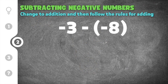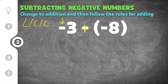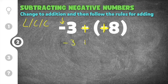Moving on to our second problem: negative three minus negative eight. We're going to do leave change change because we're subtracting two negative numbers. We leave negative three the same, change this minus into a plus, and change negative eight into a positive eight. I'm going to rewrite this as negative three plus positive eight.